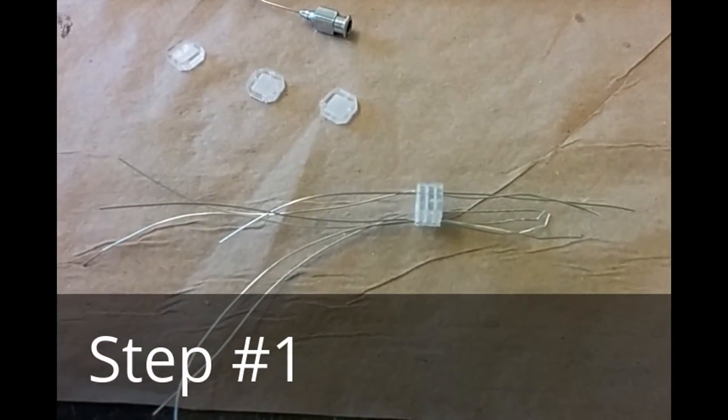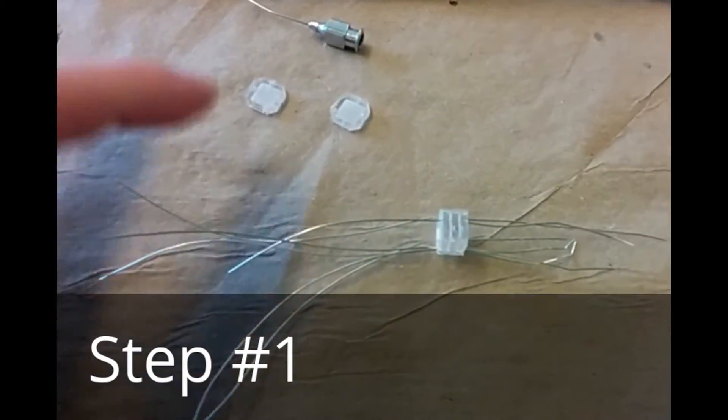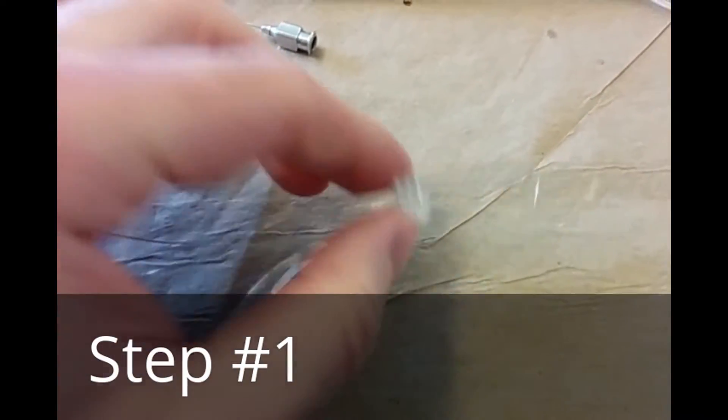So first thing you do, you take these pre-cut sockets, three of them are needed, you line them up properly and fit the wire through each of the holes.